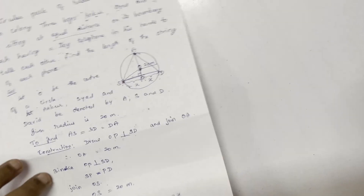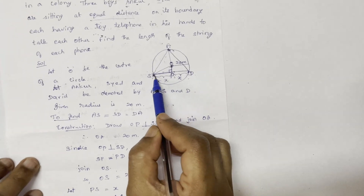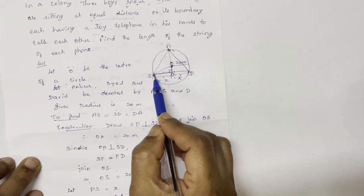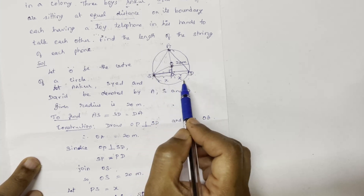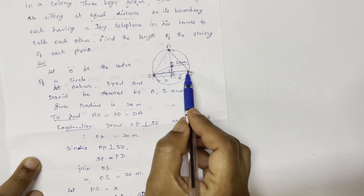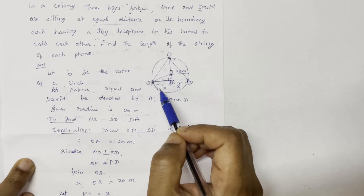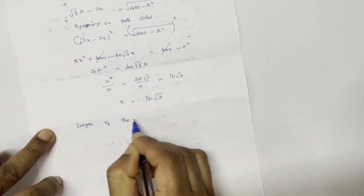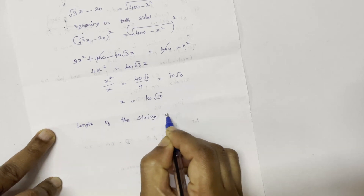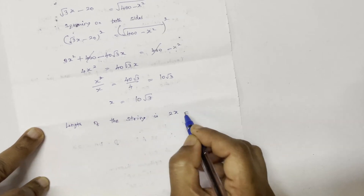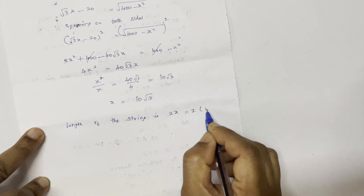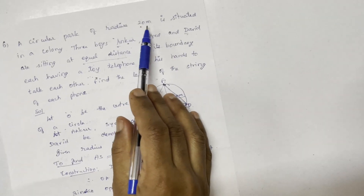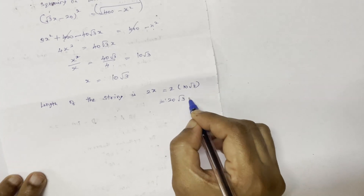Now we calculate the total length. x equals 10 root 3. The total string length is 2x, which equals 2 into 10 root 3, giving 20 root 3 meters. That is the final answer for the length of the string of each phone.